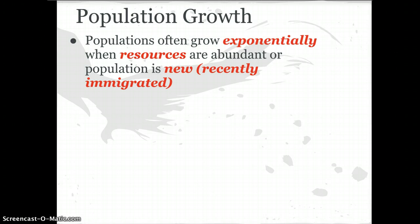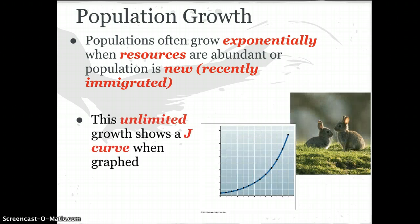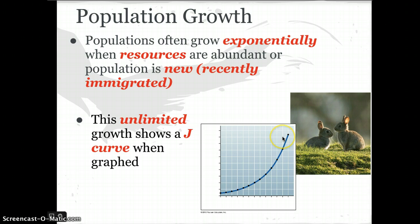All the populations you just listed are going to grow exponentially when resources are abundant, when there aren't many limiting factors, or when the population is relatively new. Think of the example of a rotten banana in your backpack bringing in insects — a new population that then reproduces. When populations grow exponentially, we show that with an unlimited growth curve called the J curve. Rabbits, when food is really abundant, make lots of babies very quickly, so their population grows really fast.